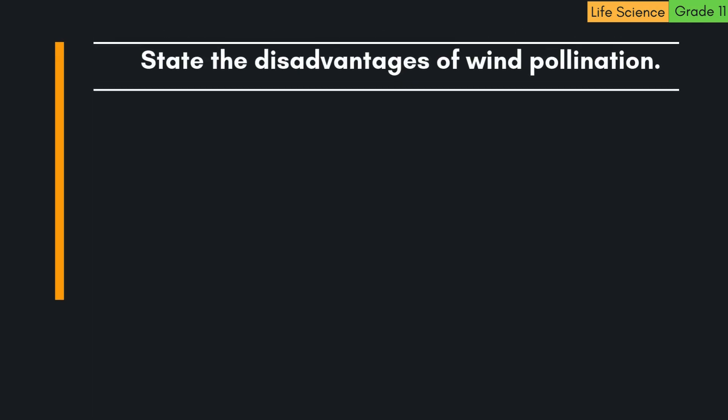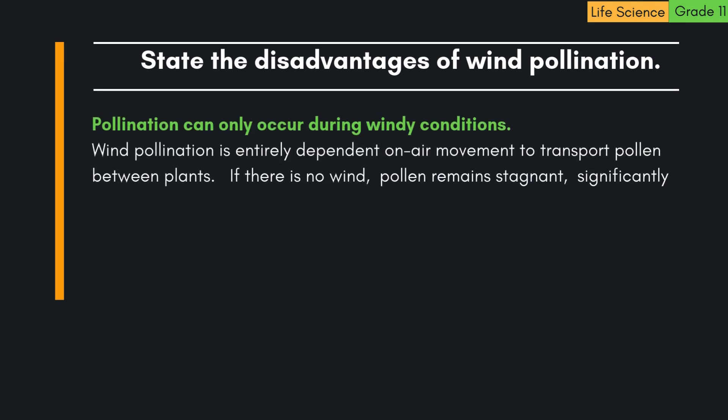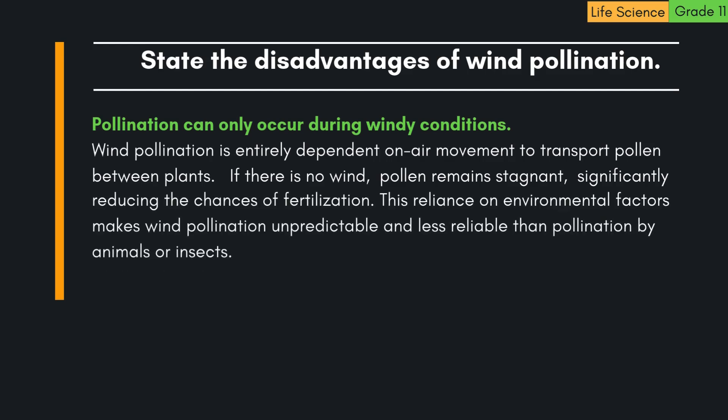State the disadvantages of wind pollination. 1. Pollination can only occur during windy conditions. Wind pollination is entirely dependent on air movement to transport pollen between plants. If there is no wind, pollen remains stagnant, significantly reducing the chances of fertilization. This reliance on environmental factors makes wind pollination unpredictable and less reliable than pollination by animals or insects.